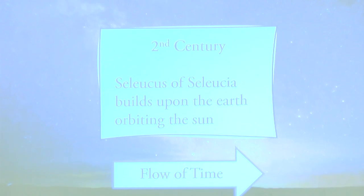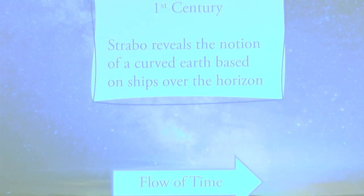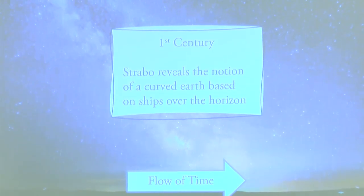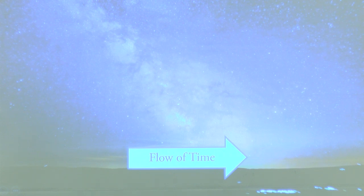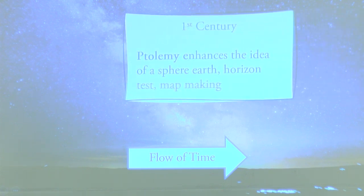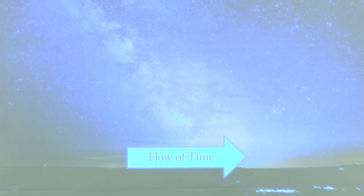By the time you get to the second century, you just see it continue to build every hundred years. By the time we get to Strabo, this is where we start to see the biggest thing that is the proof. Ships over the horizon — this is still used to this day. Then Ptolemy — all this is about map making, early forms of ships over the horizon. All the things still used today that are not provable. Can you see the beginning of the preconditioning? It's horrible but extremely well designed, and it all started back then.